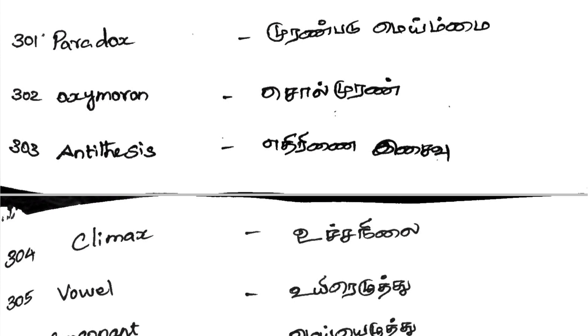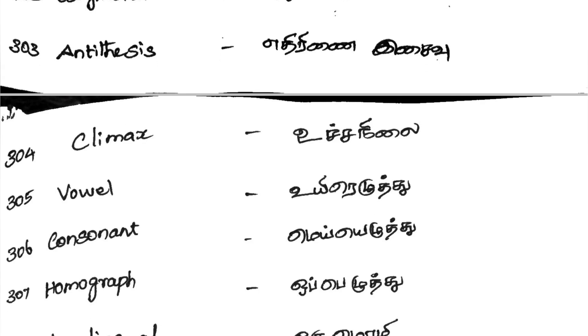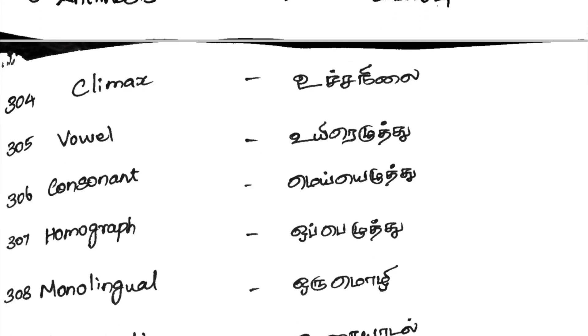Paradox — Muran Padu Maimai. Oxymoran — Sol Muran. Antithesis — Yedirinay Isayivu. Climax — Ucchanilai.